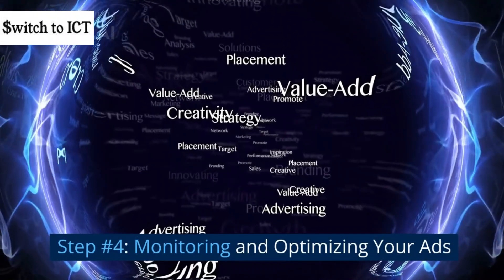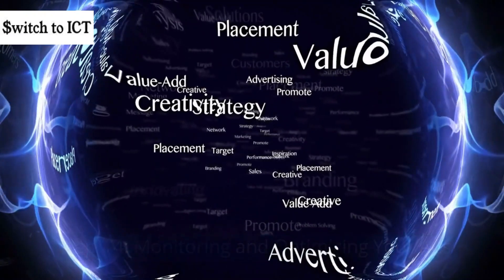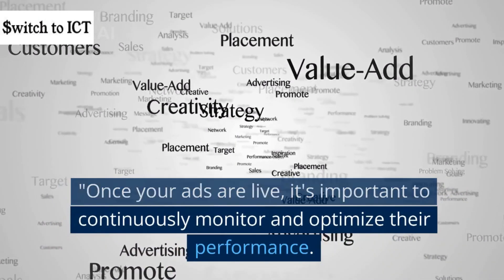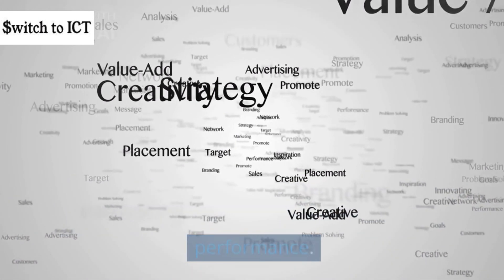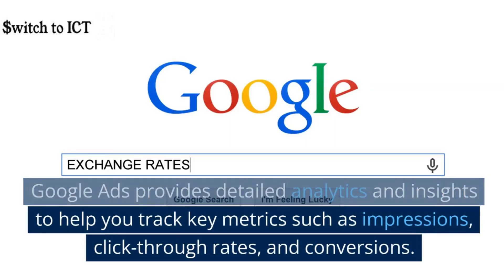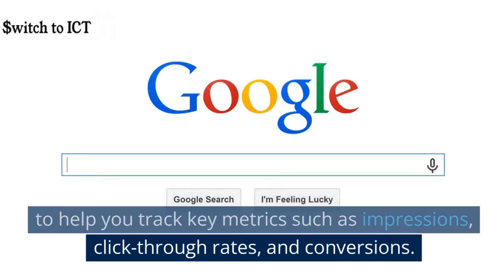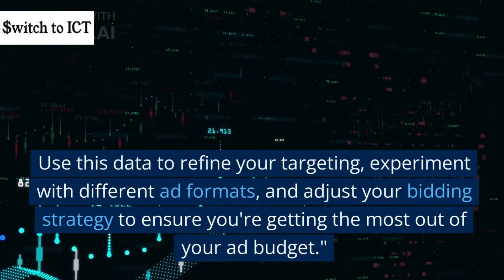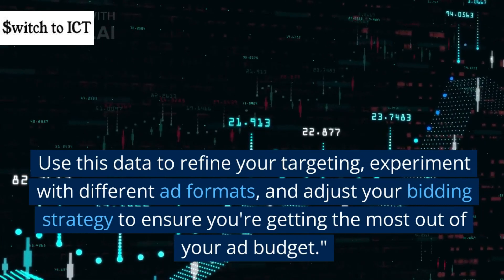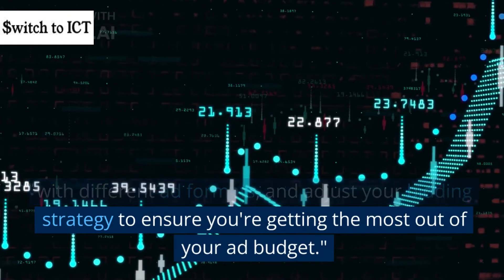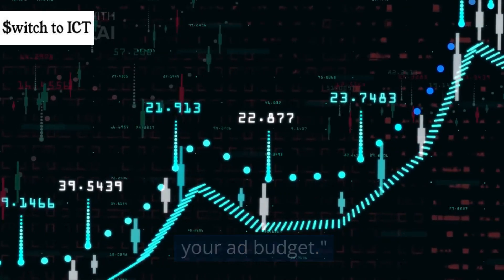Step number four: monitoring and optimizing your ads. Once your ads are live, it's important to continuously monitor and optimize their performance. Google Ads provides detailed analytics and insights to help you track key metrics such as impressions, click-through rates, and conversions. Use this data to refine your targeting, experiment with different ad formats, and adjust your bidding strategy to ensure you are getting the most out of your ad budget.